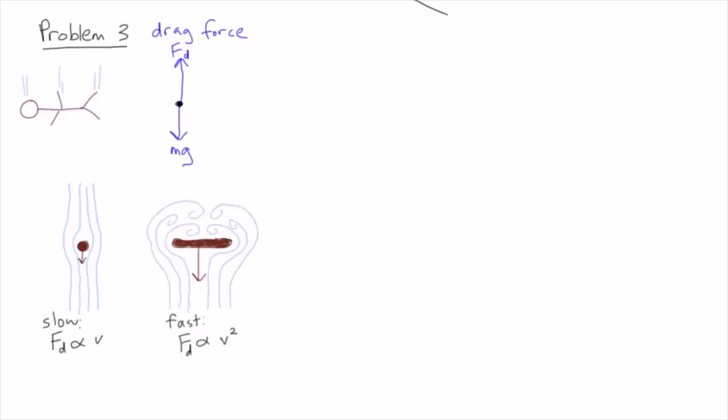For a small slow moving object, when the air moves smoothly past it, the drag is proportional to the speed of the object. But for a large fast moving object, the movement of the air around the object will be turbulent and here the drag is proportional to the speed squared.